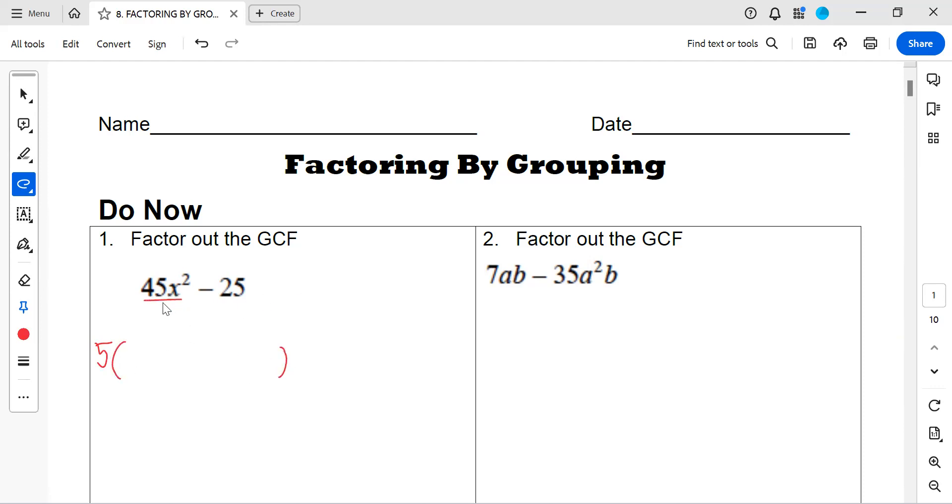I open my parentheses and I'm going to divide each term by my GCF. 45 divided by 5 is going to be 9, bring down my x², and 25, negative 25 divided by 5 is going to give me minus 5. And that's it.